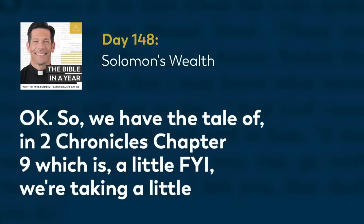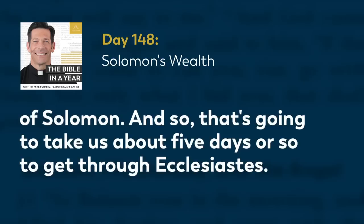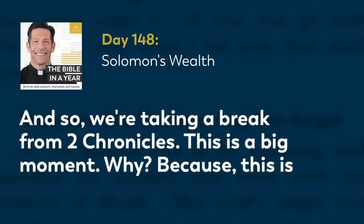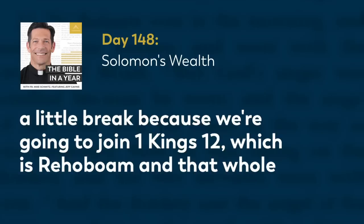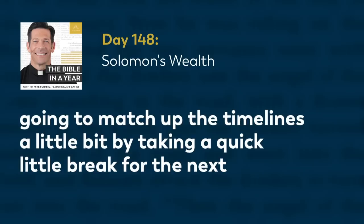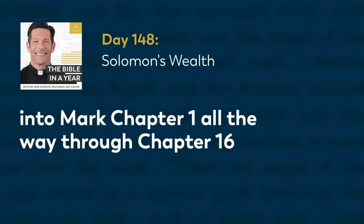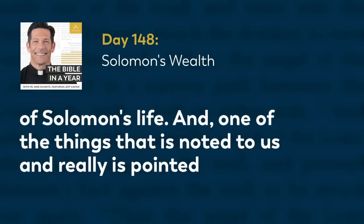So we have the tale of 2 Chronicles 9 — just a little FYI: we're taking a little break from 2 Chronicles for the next number of days, maybe roughly about two weeks. Tomorrow we're starting Ecclesiastes, which is one of the readings of the wisdom of Solomon. That's going to take us about five days to get through Ecclesiastes. This is a big moment because this is the end of Solomon's life. We begin with 2 Chronicles 10, the beginning of Rehoboam as the new king, which is going to be pretty much a disaster. But we're taking a little break because we're going to join 1 Kings 12, which is Rehoboam and that whole story. We're kind of going to match up the timelines by taking a quick break for the next five days. After Ecclesiastes, we're jumping into Mark chapter 1 all the way through chapter 16.